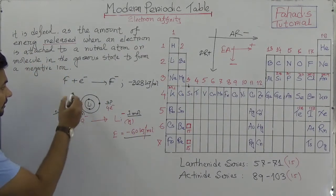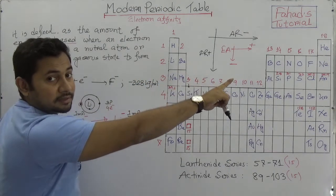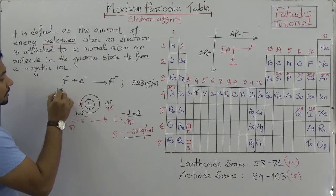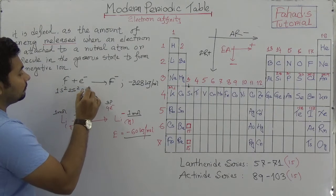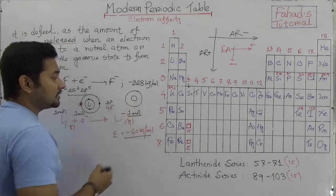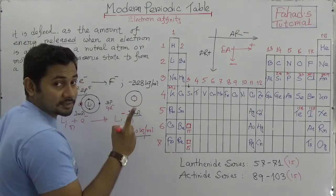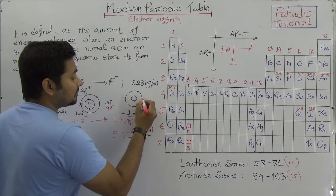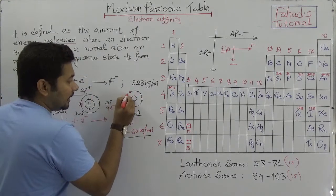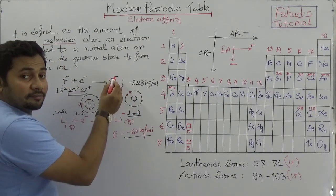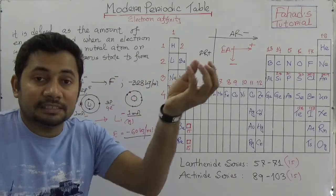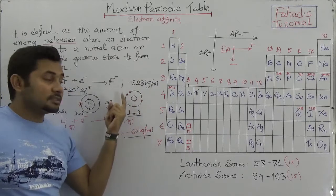Fluorine's electron configuration is 1s2, 2s2, 2p5 — it has nine protons and seven electrons in the second shell. In the second shell, there are two electrons in 2s and five electrons in 2p orbitals. When another electron is added to fluorine to form F minus, there will be eight electrons altogether in the outer shell. Fluorine is more prone to accept an electron because it has seven electrons outside, and the released energy is very high.